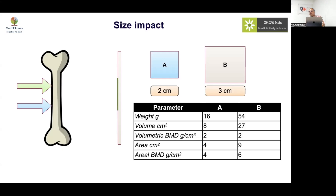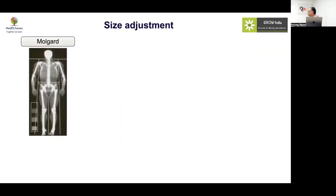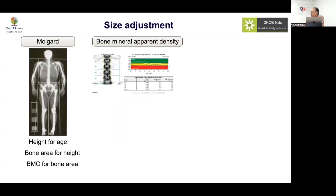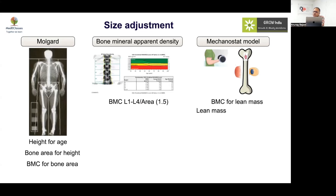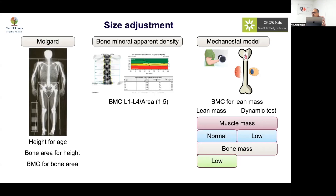This is a fundamental flaw in DEXA: smaller bones will look weaker, and longer bones will look stronger, even at the same true density. Adjustment formulas exist — you correct for height-for-age and bone area for height and then compare. Apparent density measures and models using lean mass and dynamic testing can also help correct for size issues.